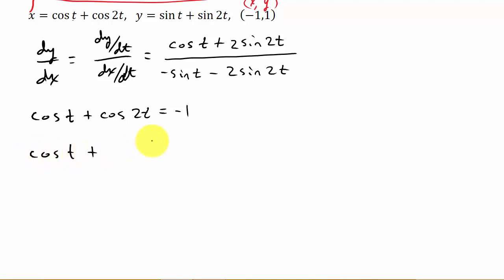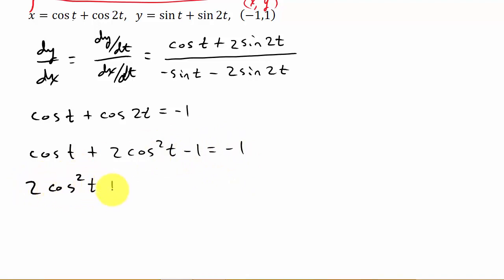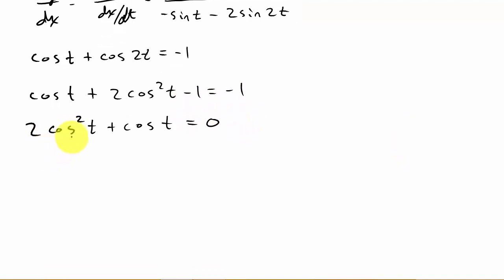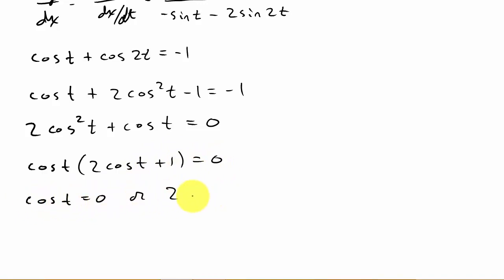So: cosine t plus cosine 2t. Notice cosine 2t has angle 2t, so I can use the double angle identity to rewrite it as 2 cosine² t minus 1, giving me cosine t + 2 cosine² t minus 1 = negative 1. Setting this equal to zero: 2 cosine² t plus cosine t = 0 (the negative ones cancel). Factoring out cosine t gives cosine t times (2 cosine t + 1) = 0, so cosine t = 0 or cosine t = negative 1/2.